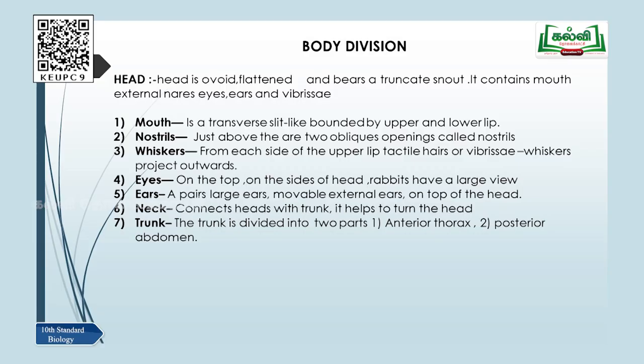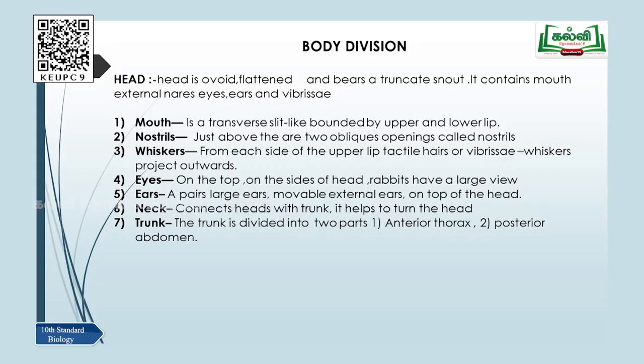The mouth of the rabbit is a transverse slit bounded by upper and lower lips. The nostrils are just above the upper lip — two oblique openings — and the rabbit breathes and smells with the help of the nostrils. Whiskers are tactile hairs projected outwards on the upper lip. The eyes are on the sides of the head and have a large field of view, allowing the rabbit to see a long distance. A pair of large, movable external ears is present on top of the head.